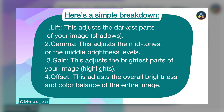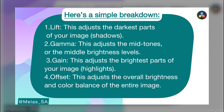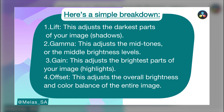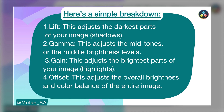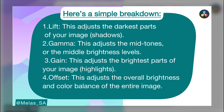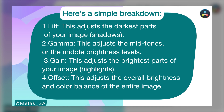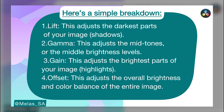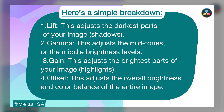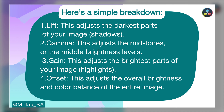The Gamma helps us adjust the mid-tones — the middle brightness level. It's like having your picture with the dark side and the bright side, and the middle part is where Gamma comes in. You're able to adjust the brightness of your image in the middle part of your video. The Gain adjusts the brightest parts of your image, most especially the highlights.